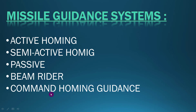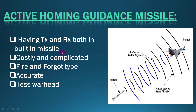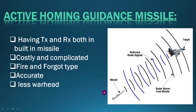First, let's look at active homing missiles. In active homing missiles, the missile contains both a transmitter and a receiver. Because it carries both antennas, the size becomes a constraint, meaning the missile can carry less warhead or fewer explosive elements.